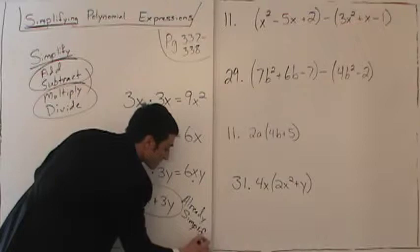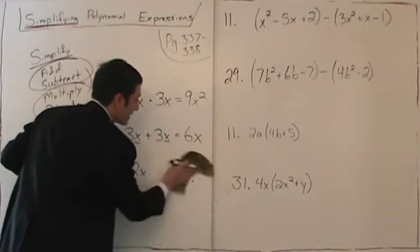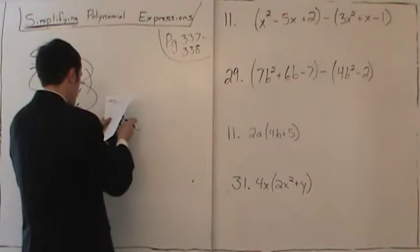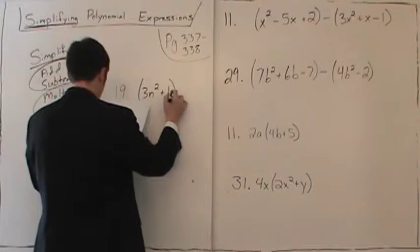Now let's look at some examples from the bottom of the 6-1 handout sheet. Number 19 says: 3n squared plus 1, add to this quantity 8n squared minus 8.